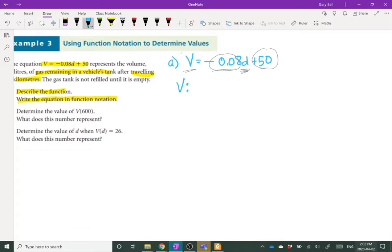So let's just label those variables just so we've got it. Now your volume depends upon your distance. V is volume of fuel, and that's in liters. D is the distance driven, and that's in kilometers.